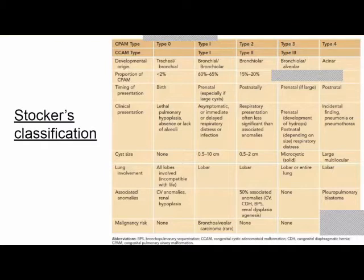Type 1 is the most common, accounting for 60 to 65% of cases. Developmental origin is bronchial. These are generally asymptomatic or present with delayed respiratory distress. Cyst size ranges from 0.5 to 10 centimeters. Involvement is generally lobar. Type 1 lesions are associated with bronchioalveolar carcinoma.